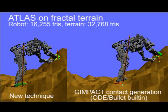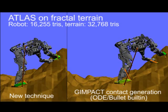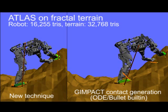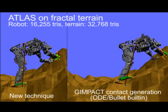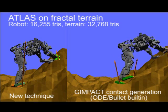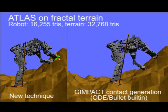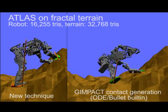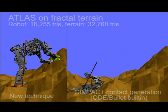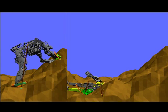In this example, a simulated Boston Dynamics Atlas robot holds a pose on a fractal terrain. Using GIMPACT, the built-in collision generator to the Open Dynamics Engine and Bullet Physics libraries, collision artifacts cause phantom impacts that eventually cause the robot to fall. The new method, shown on the left, remains stable.